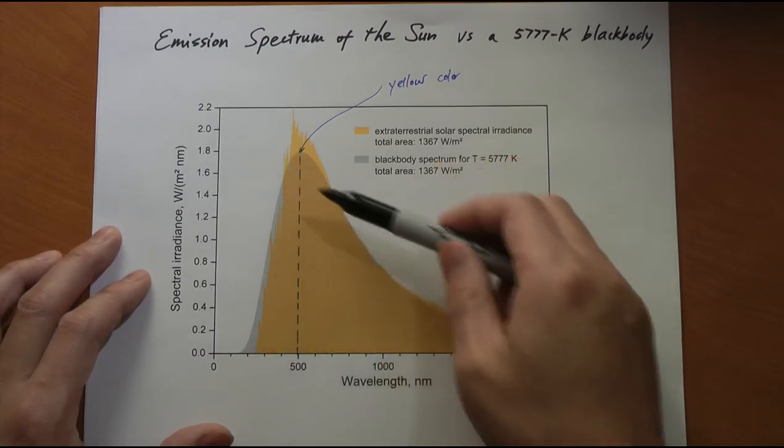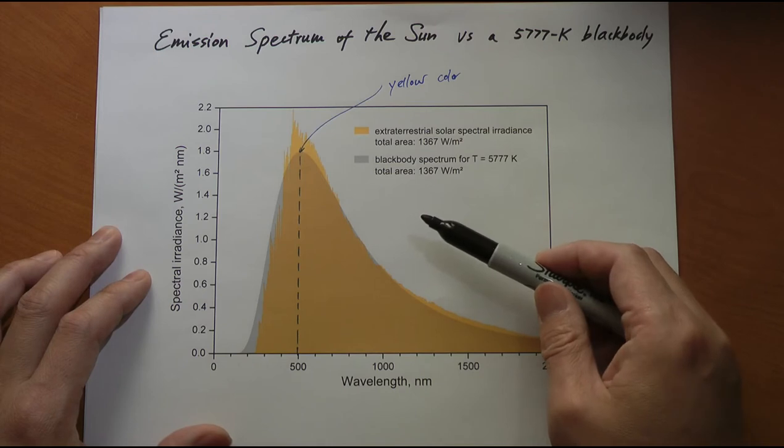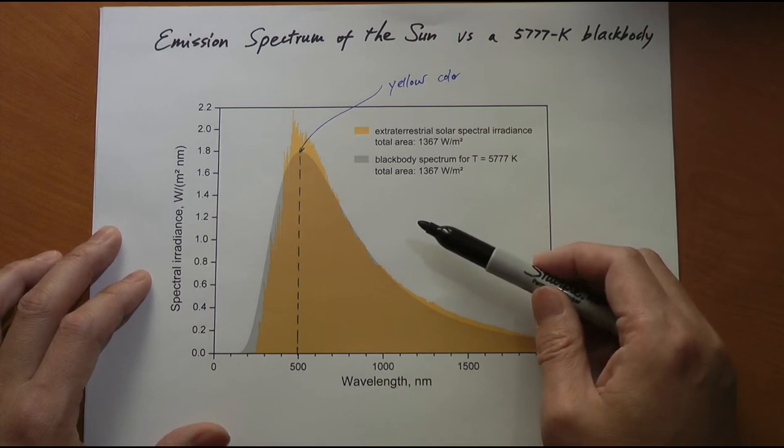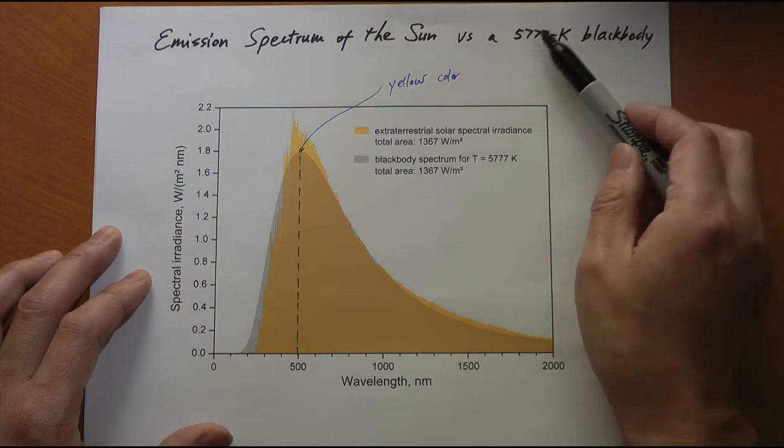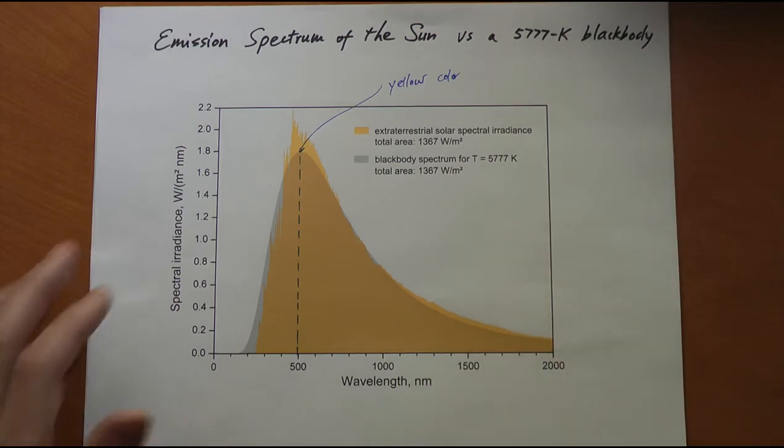This profile resembles quite closely a black body radiation profile if the temperature of the surface is at 5,777 Kelvin, or roughly 5,800 Kelvin. Using a black body at surface temperature of 5,800 Kelvin will give you an excellent approximation to the radiation from the sun. This is why we say the surface temperature of the sun is around 5,800 Kelvin.